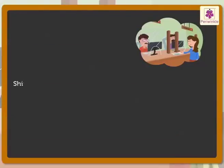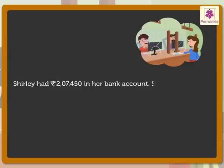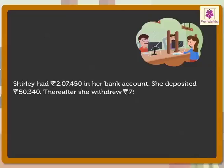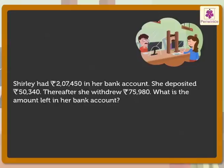Shirley had 2,07,450 rupees in her bank account. She deposited 50,340 rupees. Thereafter, she withdrew 75,980 rupees. What is the amount left in her bank account?